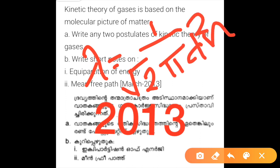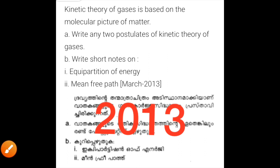The mean free path lambda = 1/√(2πd²n), where d is the diameter of the molecule and n is the number density. It represents the average distance between two successive collisions of a gas molecule.